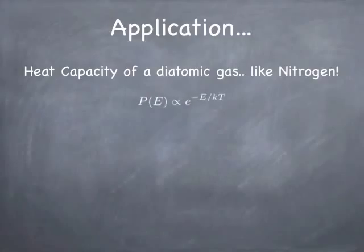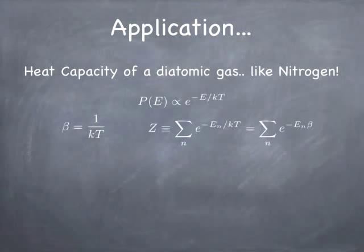The basic idea is that the probability of the molecule having any particular energy is proportional to the Boltzmann factor, e to the minus energy divided by kT. It's convenient to define beta to be 1 over kT, and then you can rewrite this as e to the minus energy times beta. There's a function called the partition function — it's simply the sum of e to the minus energy times beta for all of the states in the system. Every individual state has a contribution to the sum.